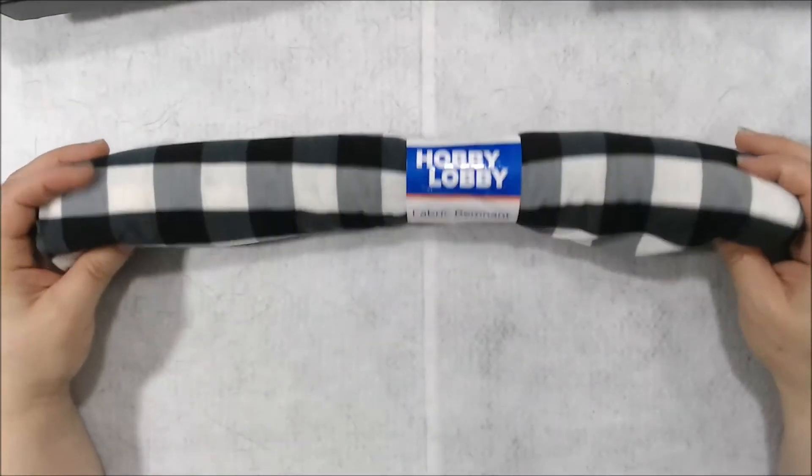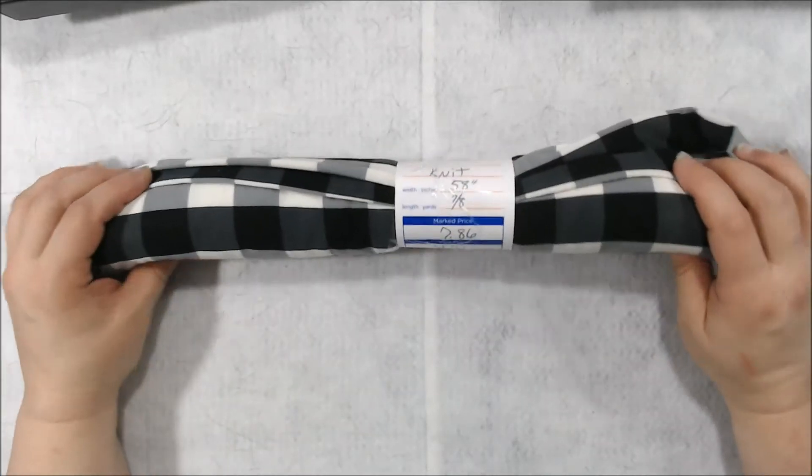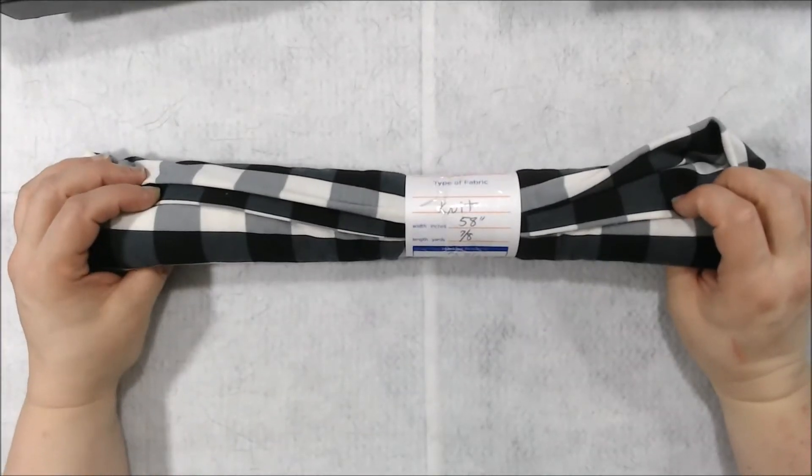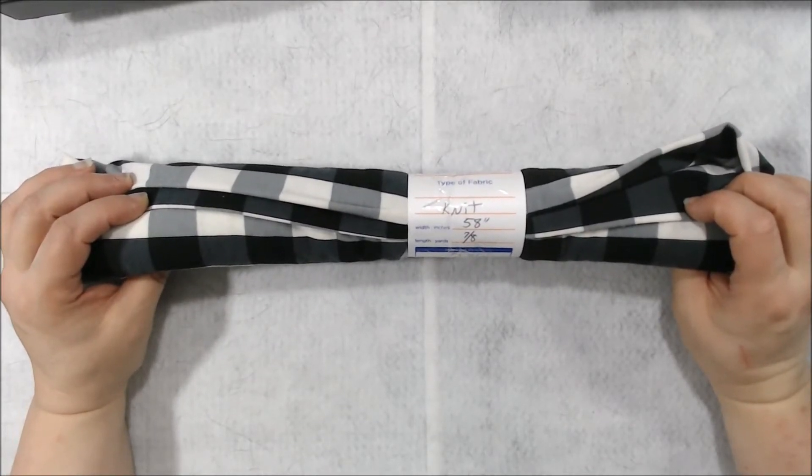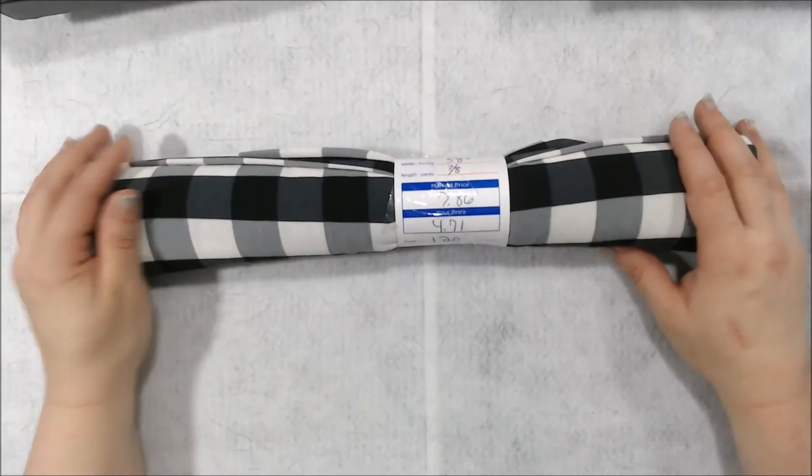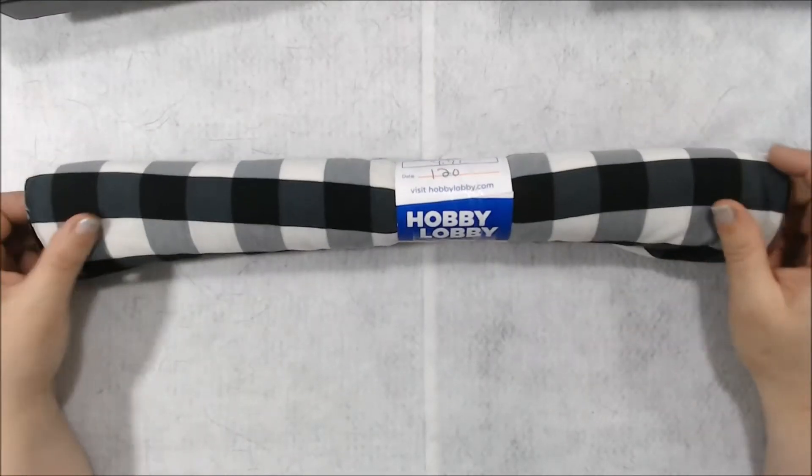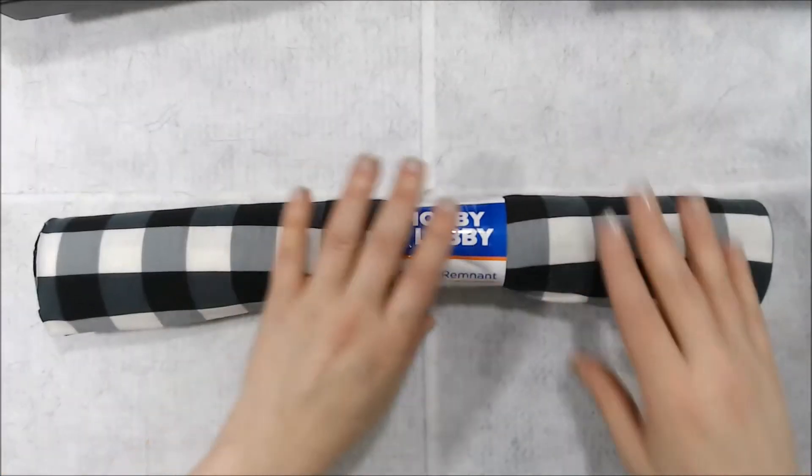This was already in the clearance area. And this was a fabric. It's jersey or knit as they like to call it. It is width 58 inches and length is 7 eighths yards. It was normally $7.86. And I got it for $4.71. I really liked the feel of it and I liked the coloring. So I thought this would be fun if I'm going to make any more journal covers.